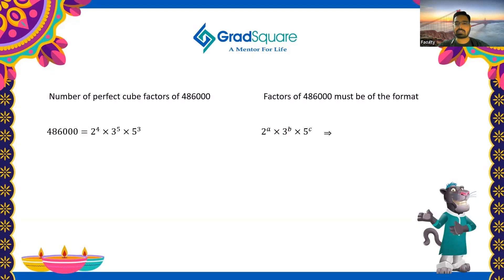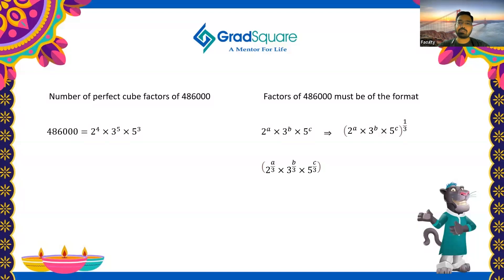The factor must be of the format 2^a × 3^b × 5^c and must be a perfect cube. For it to be a perfect cube, raising it to the power of 1/3 must yield an integer. This means 2^(a/3) × 3^(b/3) × 5^(c/3) must be an integer, so a, b, and c must each be divisible by 3. Note that 0 is divisible by 3, so a = b = c = 0 giving the factor 1, which is a valid perfect cube factor.